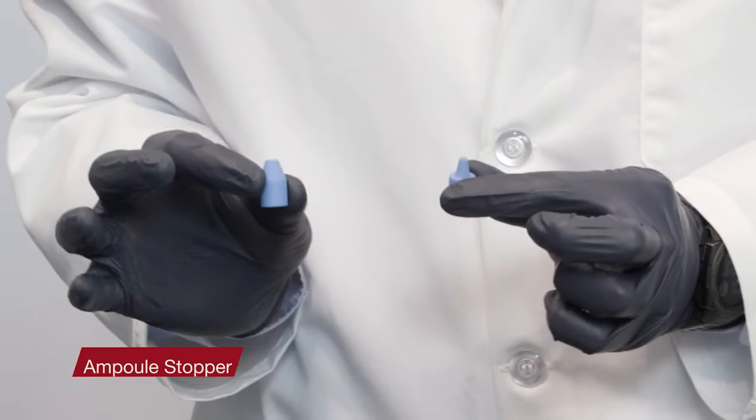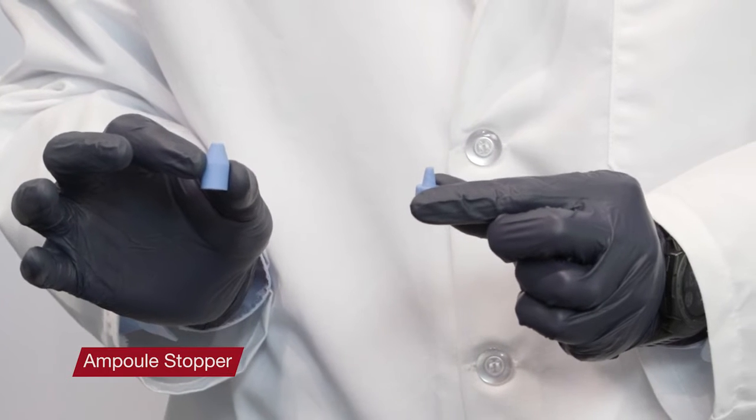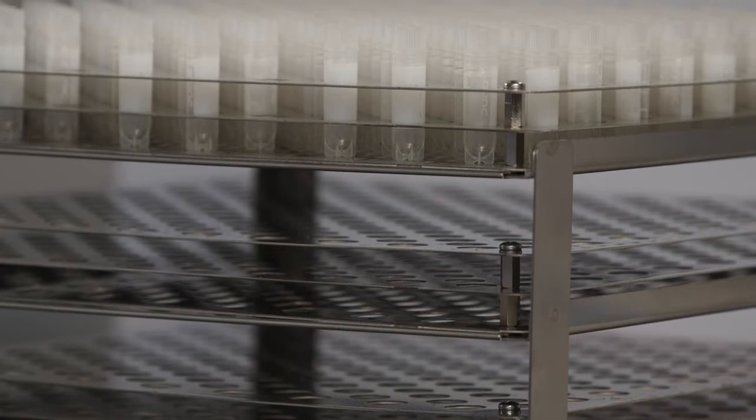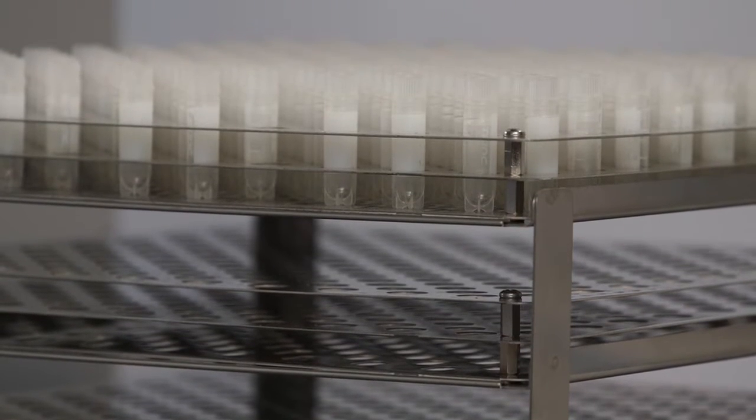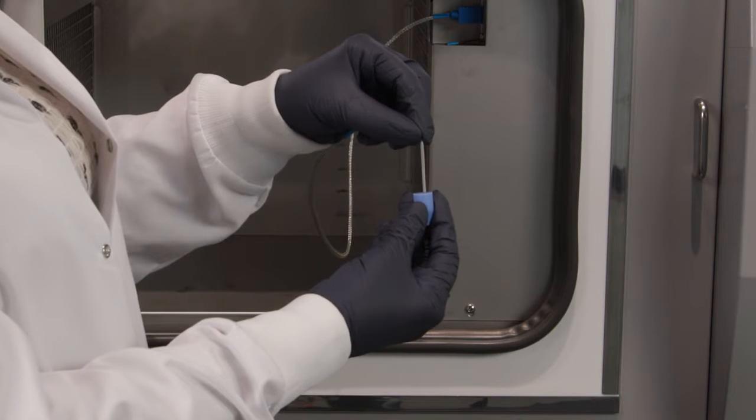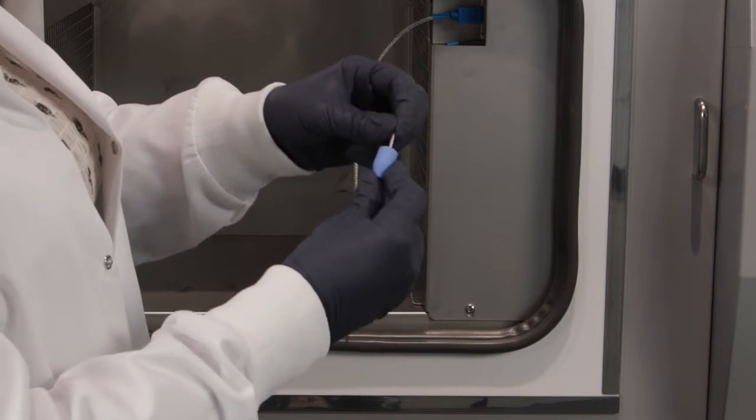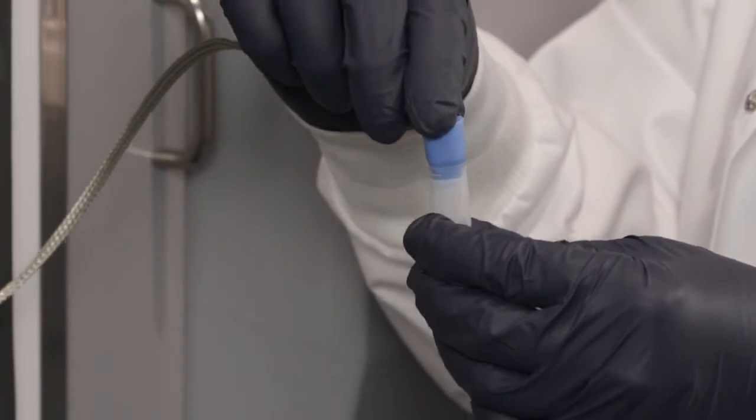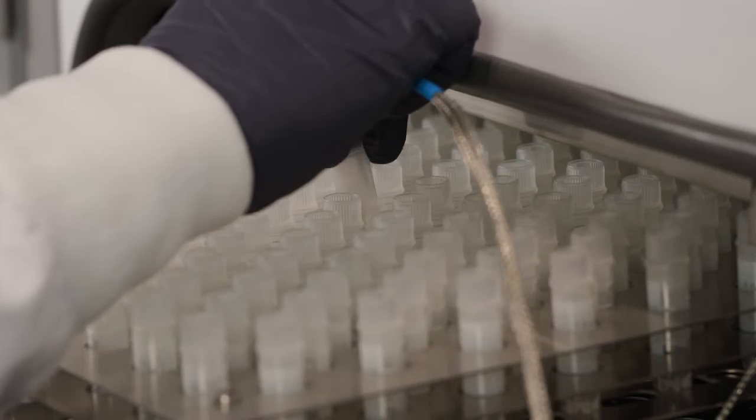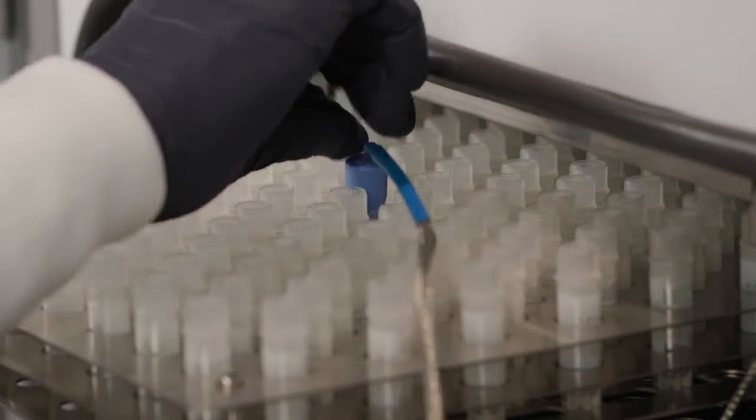All Cryomed control rate freezers ship standard with several ampule stoppers for those customers who are freezing using vials. To use the ampule stopper, the vial probe should be inserted into the stopper and placed into the vial. Then place the vial in the rack inside your controlled rate freezer.